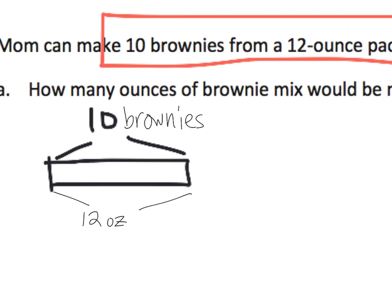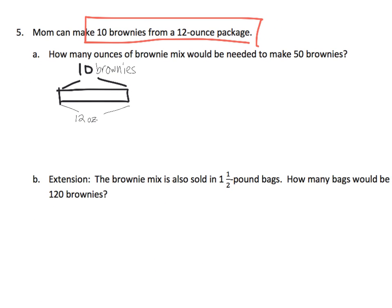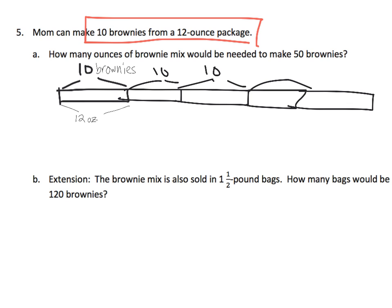And the last slide. Mom, good old mom, can make 10 brownies from a 12 ounce package. That's important to know. Then it says, how many ounces of brownie mix would be needed to make 50 brownies? Let's see. How many ounces? So, 10 ounces, 10 brownies, 10 brownies, and I'm going to zoom in here, and we're going to write down 10 brownies. And that is 12 ounces. All right, so let's zoom out. If we're going to make 50 brownies, so that means we're going to do another one, and another one, and another one, and another one. So, there's 10, 10, 10, 10, and 10. So, there's our 50 brownies.